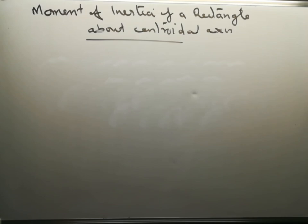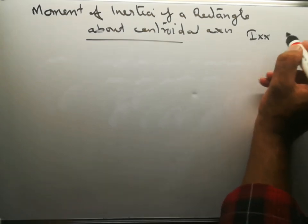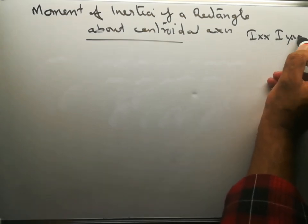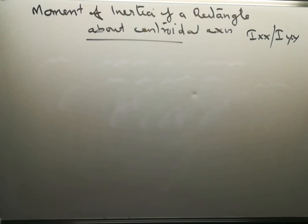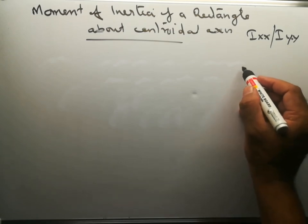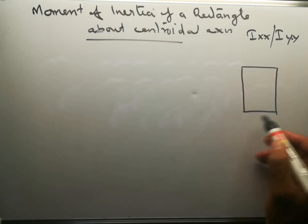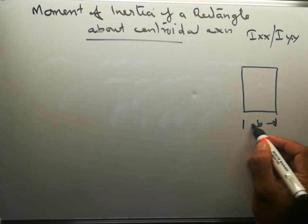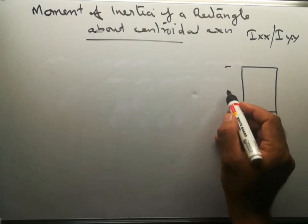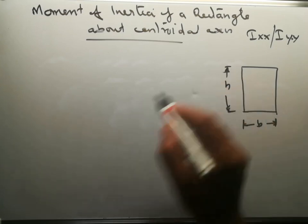To find out the moment of inertia of a rectangle about its centroidal axis, if Ixx and Iyy are the moments of inertia of a rectangle about its centroidal axes, let us see how we can derive these two. For that, let us consider a rectangle of width B units and height H units.